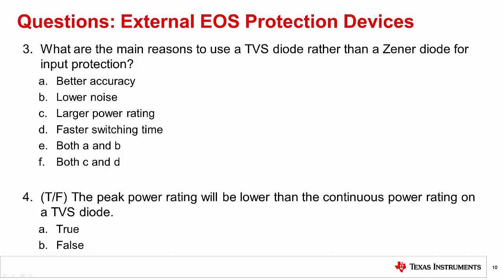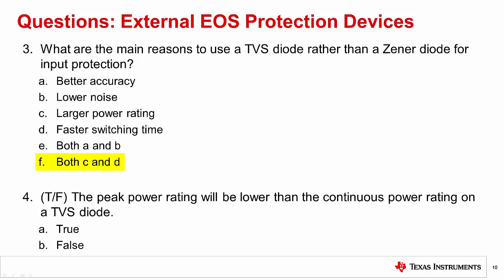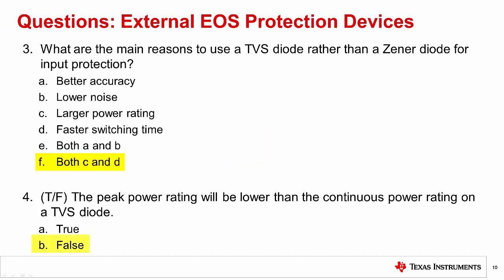Question three: what are the main reasons to use a TVS diode rather than a Zener diode for input protection? The correct answer is F, both C and D. TVS diodes are designed to dissipate large power spikes during a fault and switch quickly. Zener diodes, on the other hand, are designed to be a good reference — they have better accuracy and lower noise. Question four, true or false: the peak power rating will be lower than the continuous power rating on a TVS diode. The correct answer is B, false. The peak power rating is always higher than the continuous power rating. For example, the peak power rating for a 1 millisecond pulse may be 200 watts, while a continuous rating may be 1 watt.